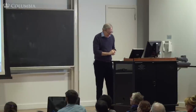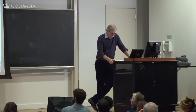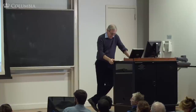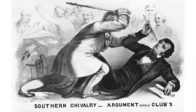Brooks went up behind Sumner, who was sitting at his desk, and said, 'I have read your speech over twice. It is a libel on South Carolina and Mr. Butler, who was a relative of mine.' As Sumner tried to get up from his desk, Brooks started pounding him on the head with his walking cane, raining down blows. Brooks later said the cane broke under the impact but he continued hitting him — 'it made a great deal more noise after the stick was broken. I wore out my cane completely, but saved the head, which is gold.' Eventually other members of the Senate rushed in and stopped it.